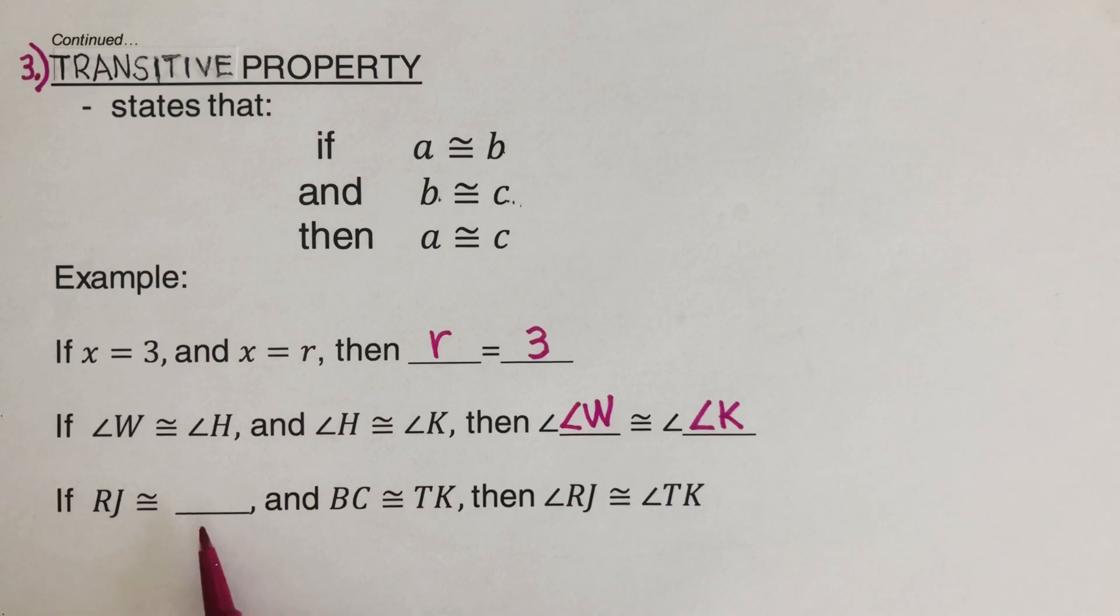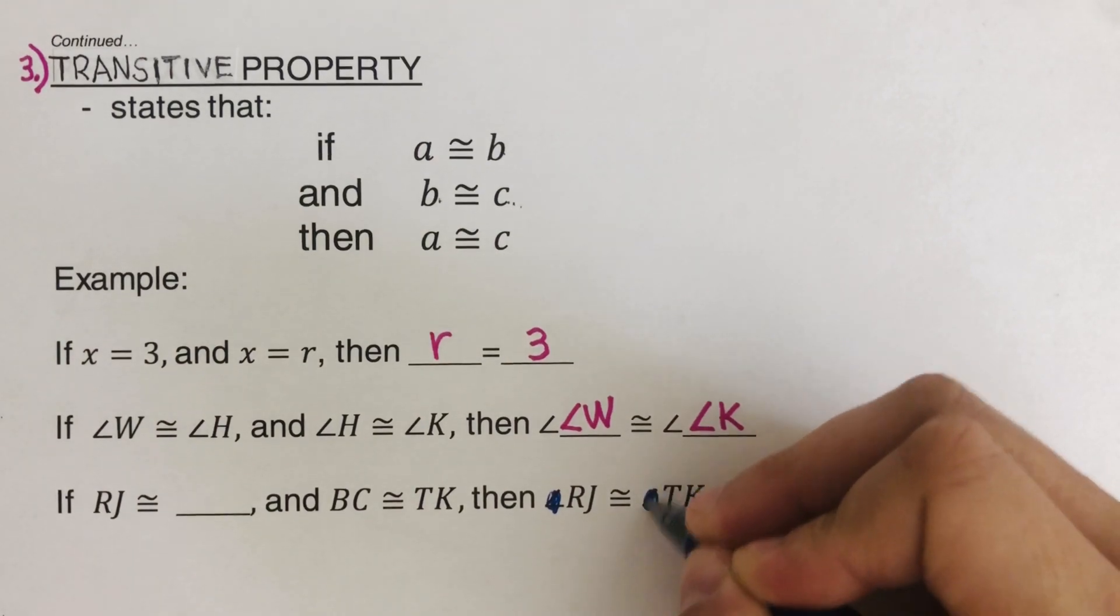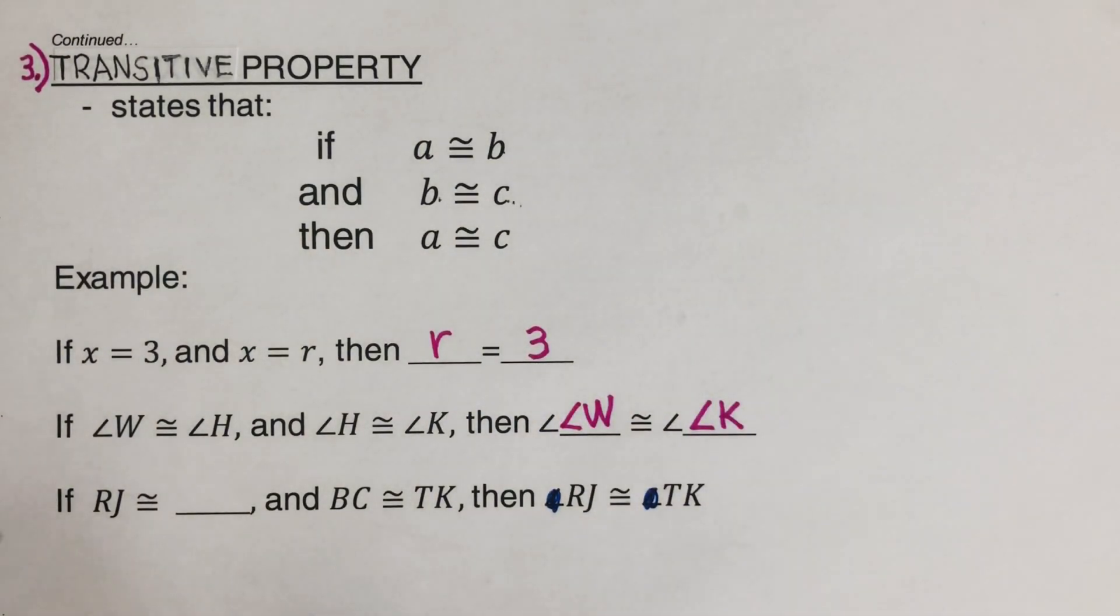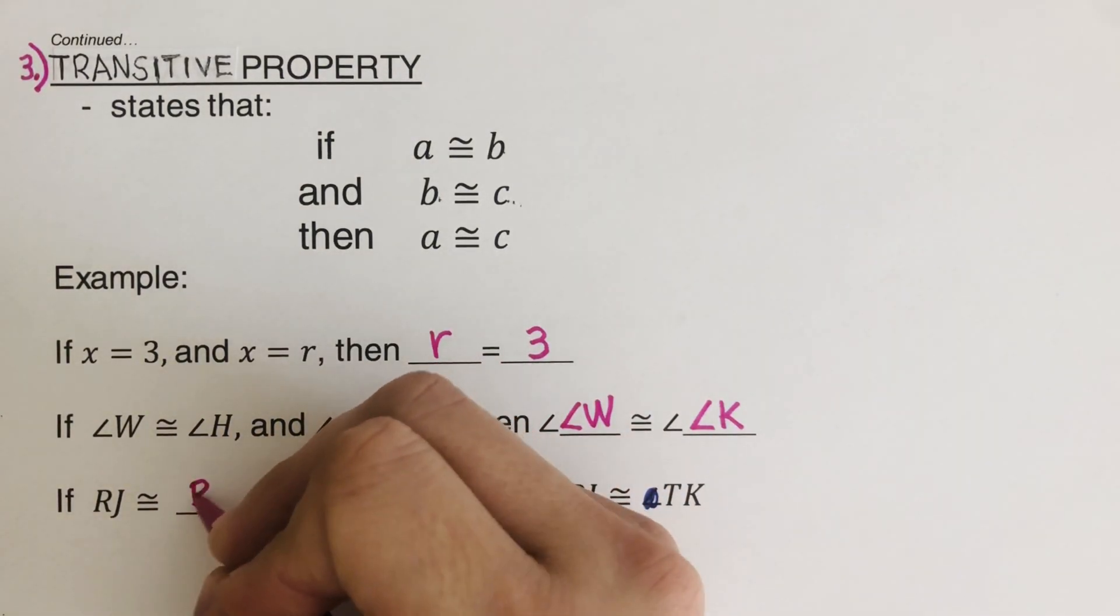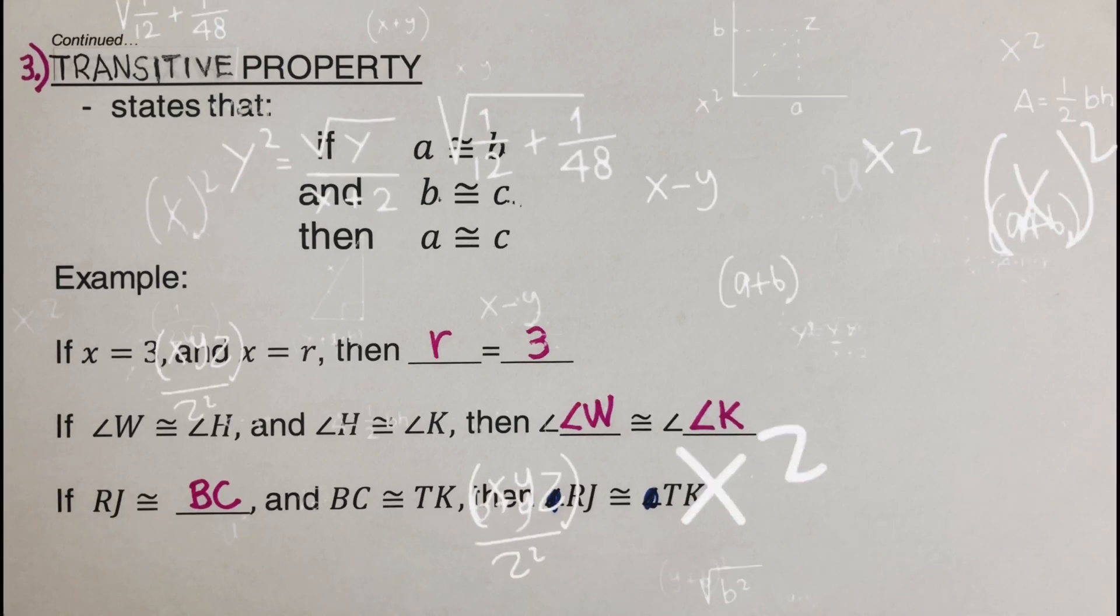RJ is congruent to blank and BC is congruent to TK. Then RJ is, this is supposed to be just RJ. So there's no angle to this. I mean, take that off. So what should we put on the blank here? If RJ is congruent to TK, what should I put on the blank here? So this one has to be BC. Okay. Did you get these blanks correct? Good. Perfect.